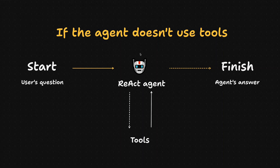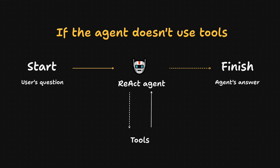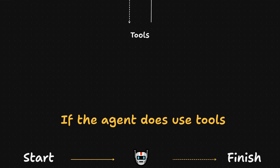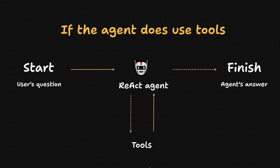Before we run the agent, let's visualize the flow in the case where the agent doesn't use tools versus the case where the agent uses tools. If we ask a question that the agent doesn't need tools for, it will use the OpenAI LLM and give the answer directly. If we ask a question that requires tools, it will use them in the Reason and Act process as long as it needs them in order to give the answer. When the agent is ready to answer the question, it will stop using tools and give the answer.